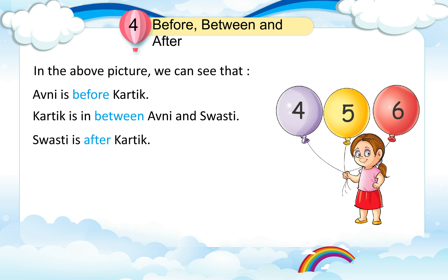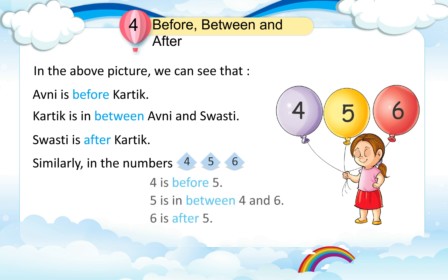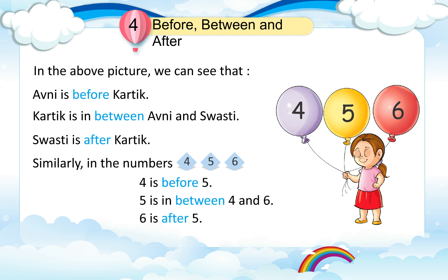Swasti is after Kartik. Similarly, in the numbers 4, 5, 6 — 4 is before 5. 5 is in between 4 and 6. 6 is after 5.